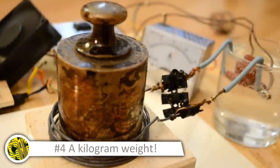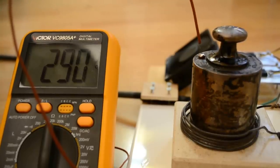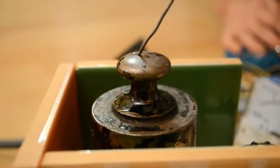What if we try to heat a kilogram weight? Because of the heat loss by conduction and convection, we can't heat it red hot, but still, it reaches more than 300 degrees.